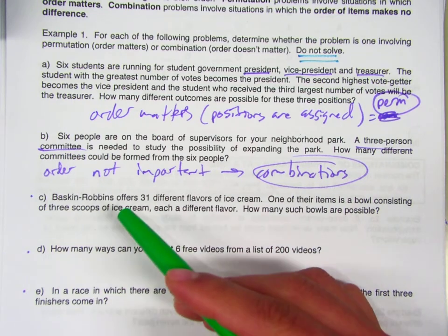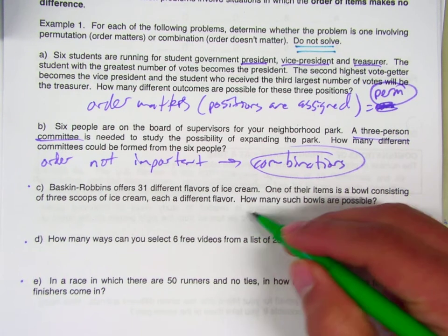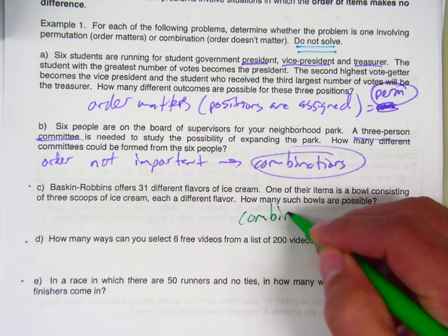Alright, so for the first problem, we're making a bowl of ice cream. You're putting three scoops in there, each scoop is a different flavor. Does the order in which the scoops are put in there make a difference? No. So this is a combinations problem.